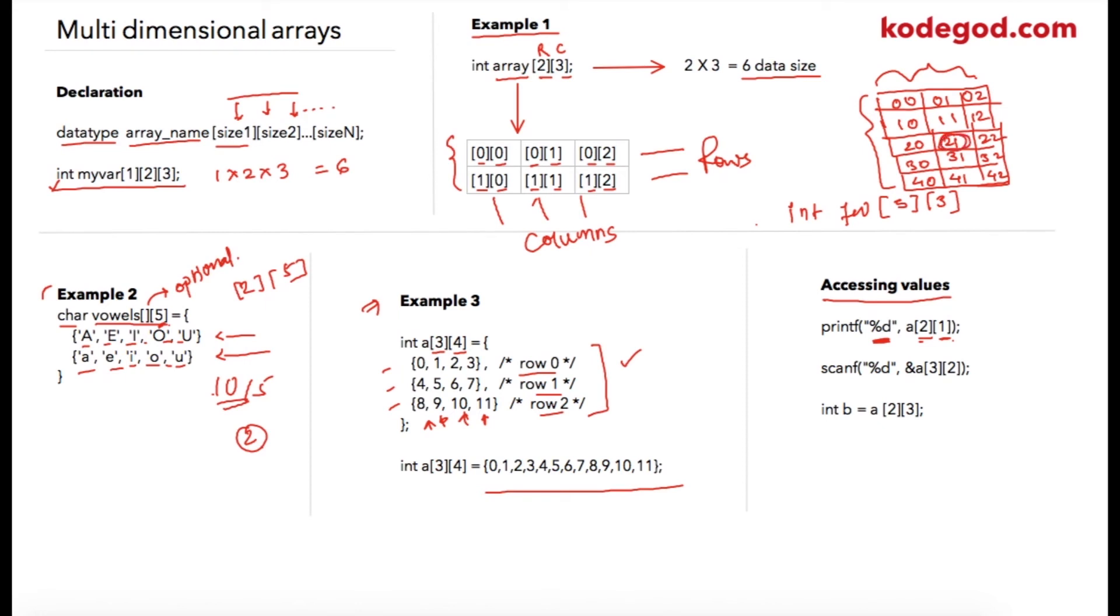Similarly, if you want to store value at a certain array location, then you can use scanf statement as regular and then specify address, variable name, and the location where you want to store those values. So in this case [3][2], the value entered by user will be stored at this location. Similarly you can assign values like this, so whatever the value that is at the location of array [2][3] will be stored into variable b.